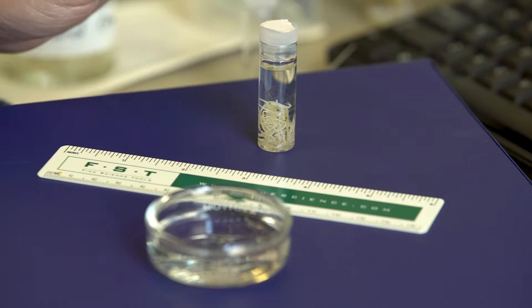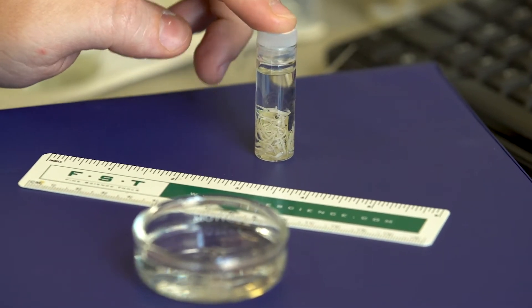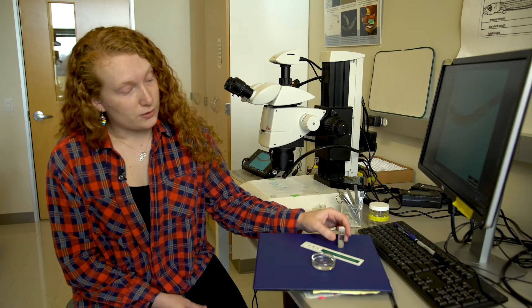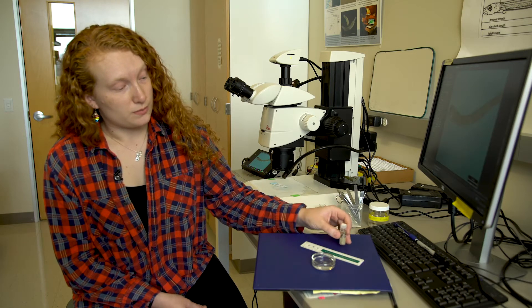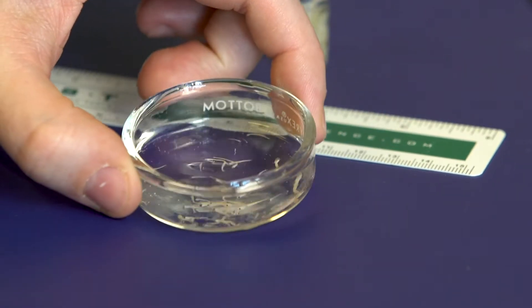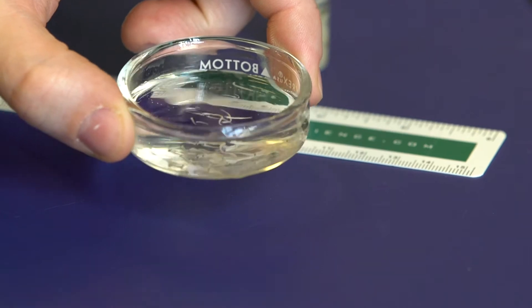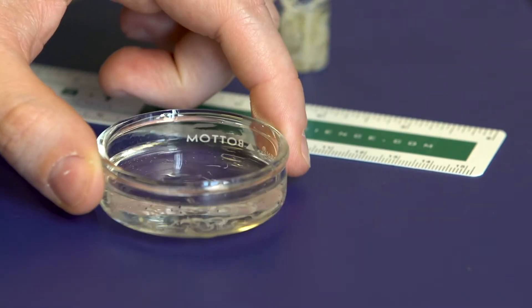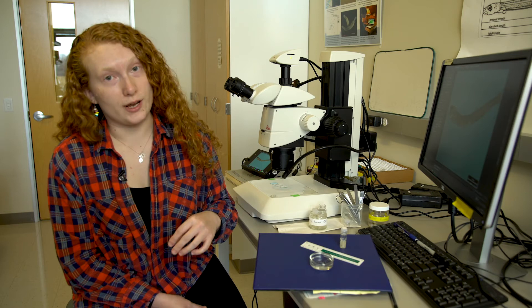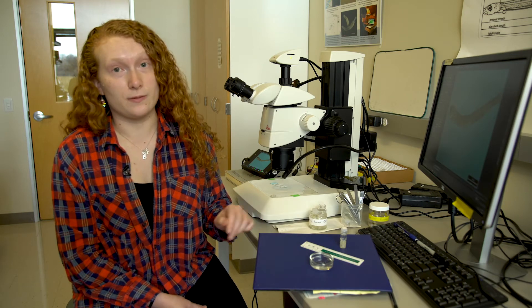So your end product from last time is going to be this little vial of preserved fish in ethanol. From this little vial you end up dumping it in a small dish where you have all of your fish to be identified. They're all in water because ethanol dries up real fast and you don't want your fish to dry up. If they dry up they become unidentifiable.